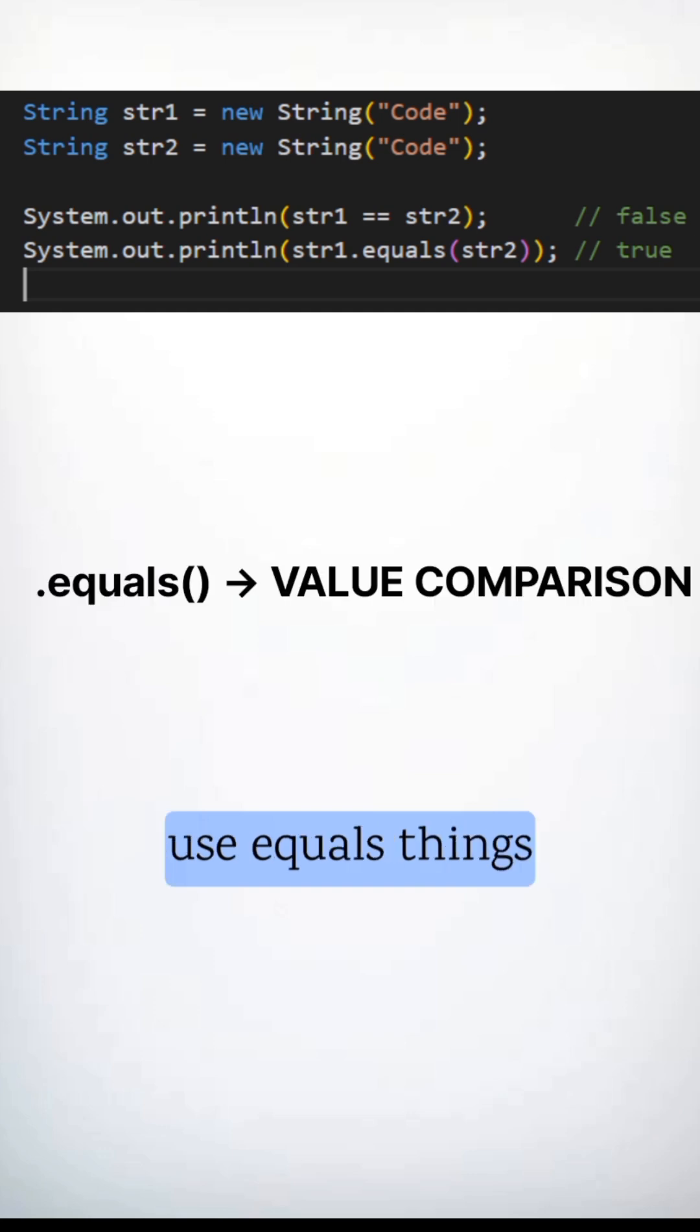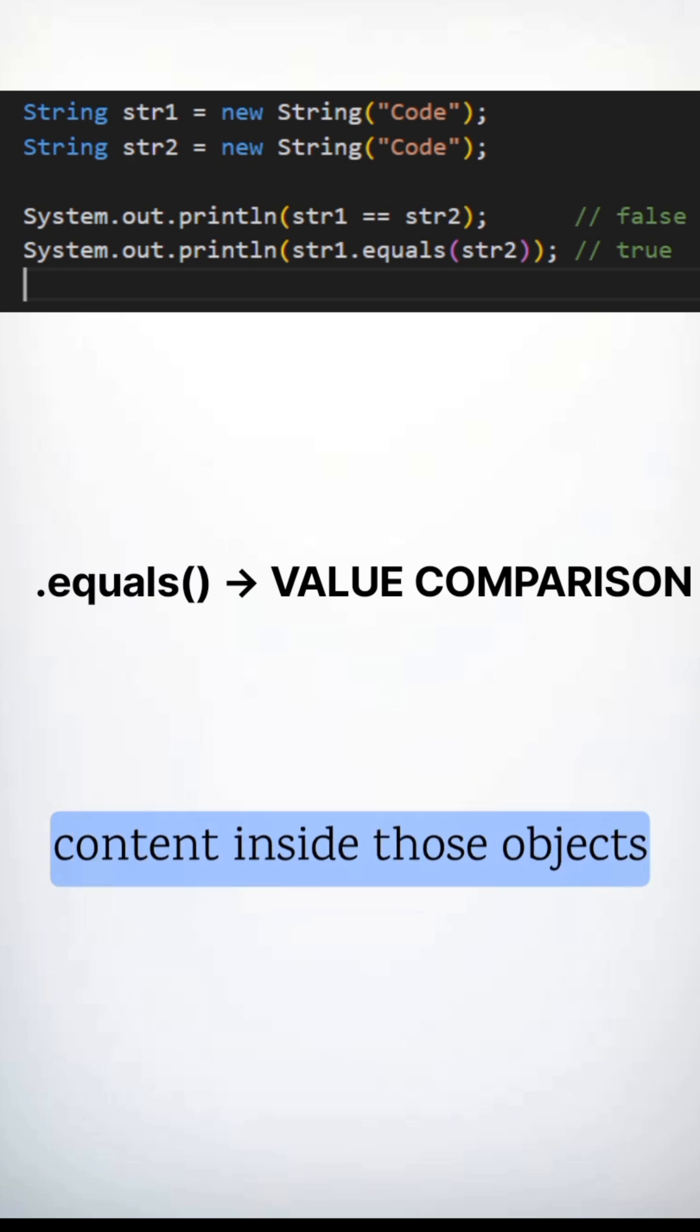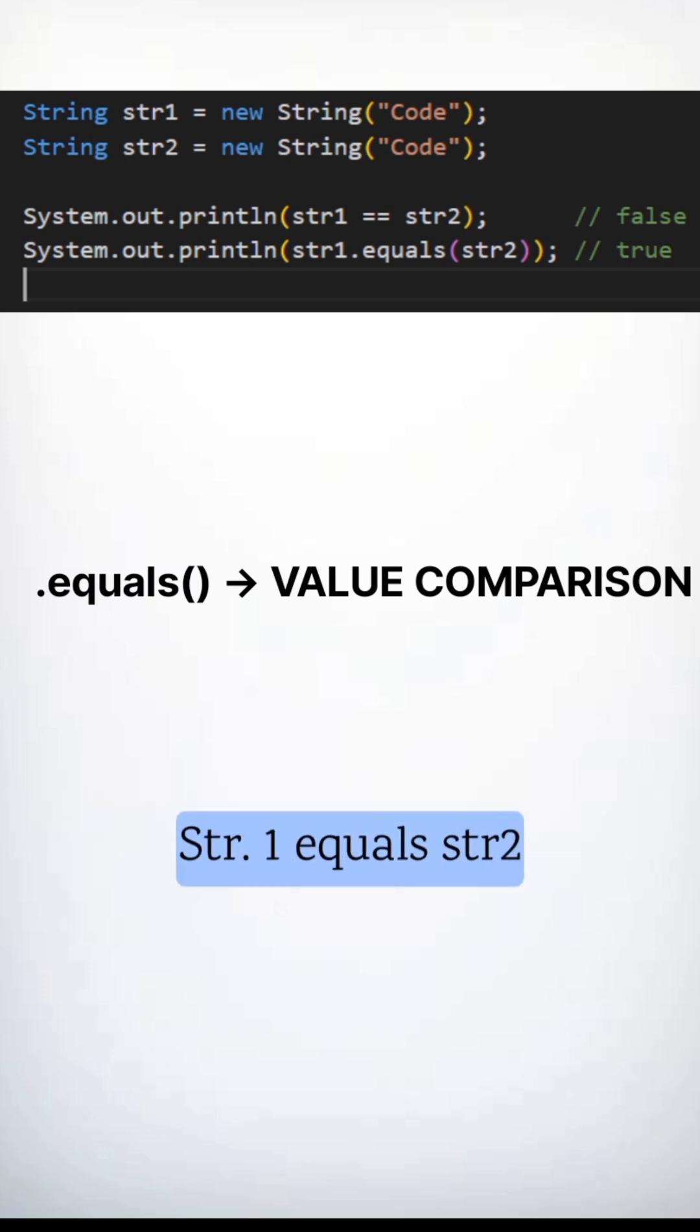But when you use dot equals, things change. The equals method compares the content inside those objects, not their addresses. So if both strings contain the same text, str1 dot equals str2 returns true.